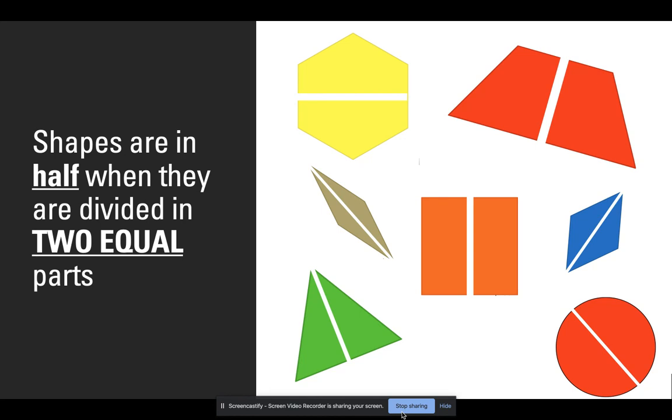For example, the shapes to the right are all divided in two equal parts. They are divided in half.